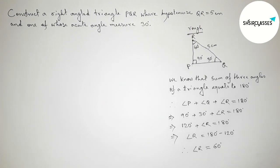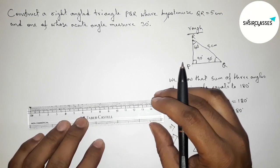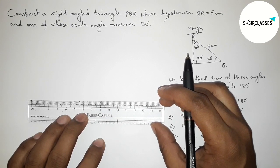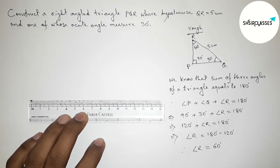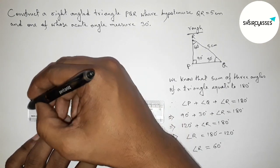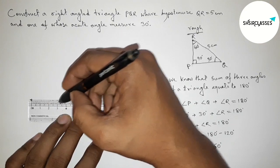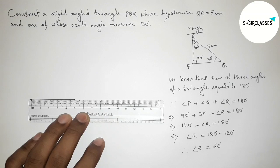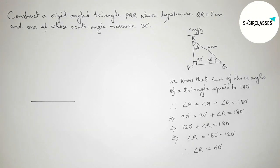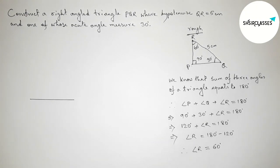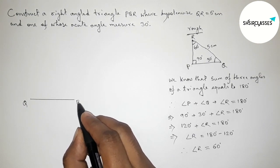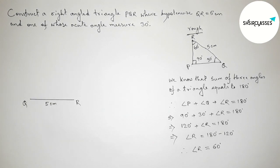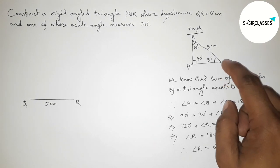First of all, we draw the hypotenuse QR equals 5 centimeters. Starting from 0, this is a 5 centimeter line segment. Taking point Q at one end and point R at the other — QR equals 5 centimeters.